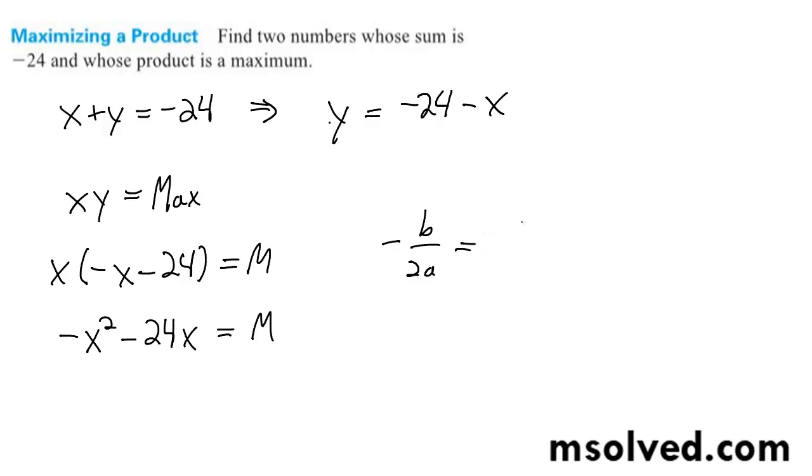Moving this over here, we get the opposite of negative 24, which is 24, over 2a, which is negative 2. And we get negative 12 out.